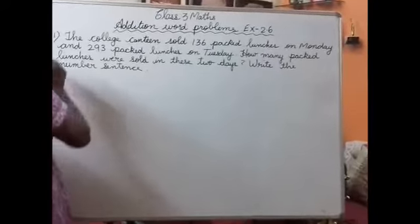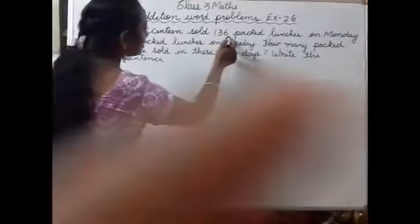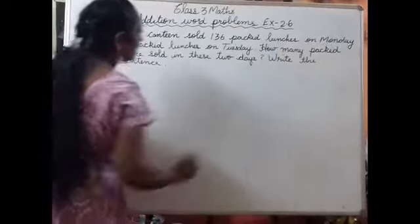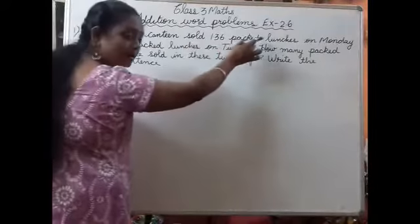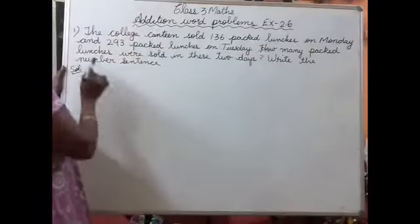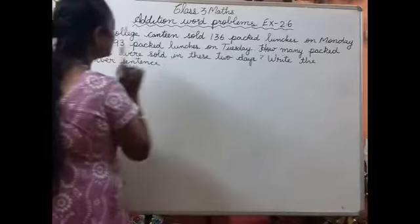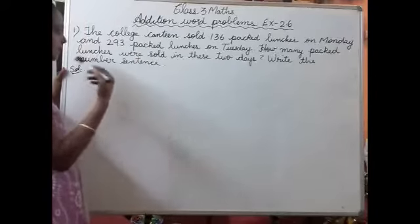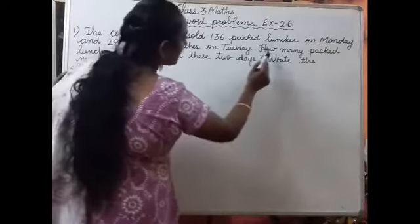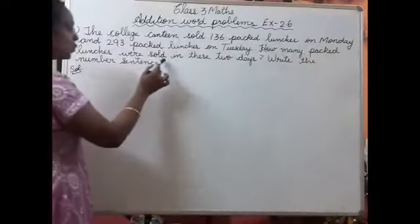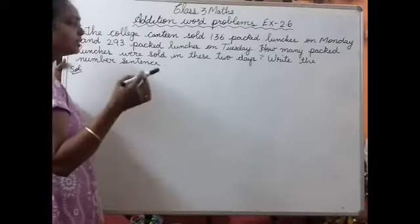First, question number 1. The college canteen sold 136 packed lunches on Monday. Monday ki din, a college canteen ne 136 packed lunches sale kia hai. And 293 packed lunches on Tuesday. Tuesday ki din 293 packets us ne sale kia hai. So we have to find how many packed lunches were sold in these two days - in dono din mein kitni packed lunches sale kia hai.